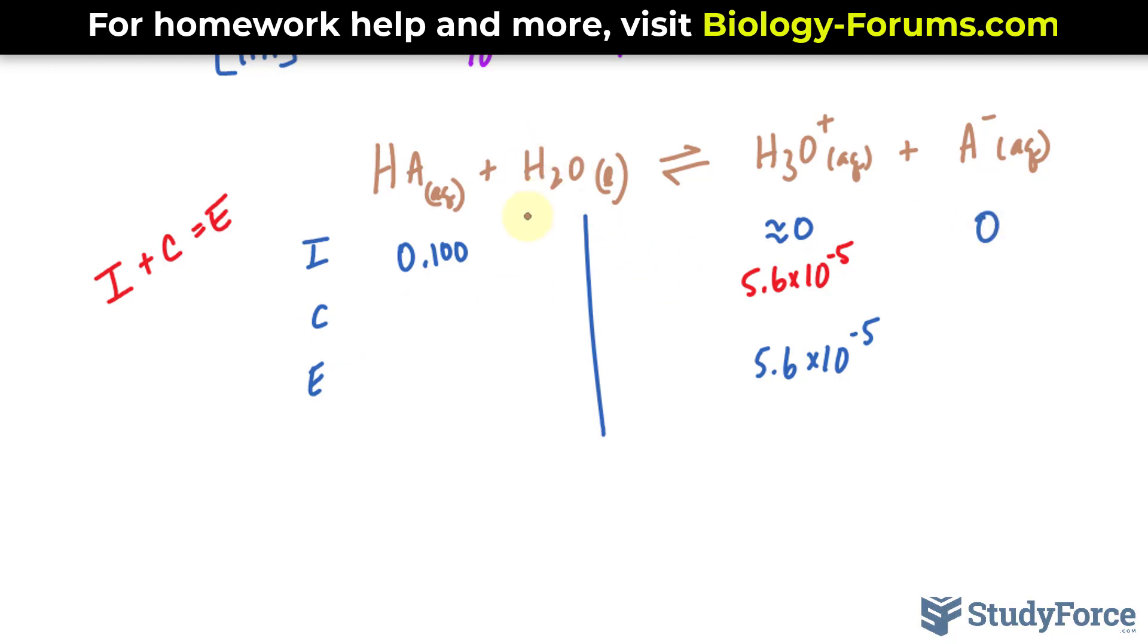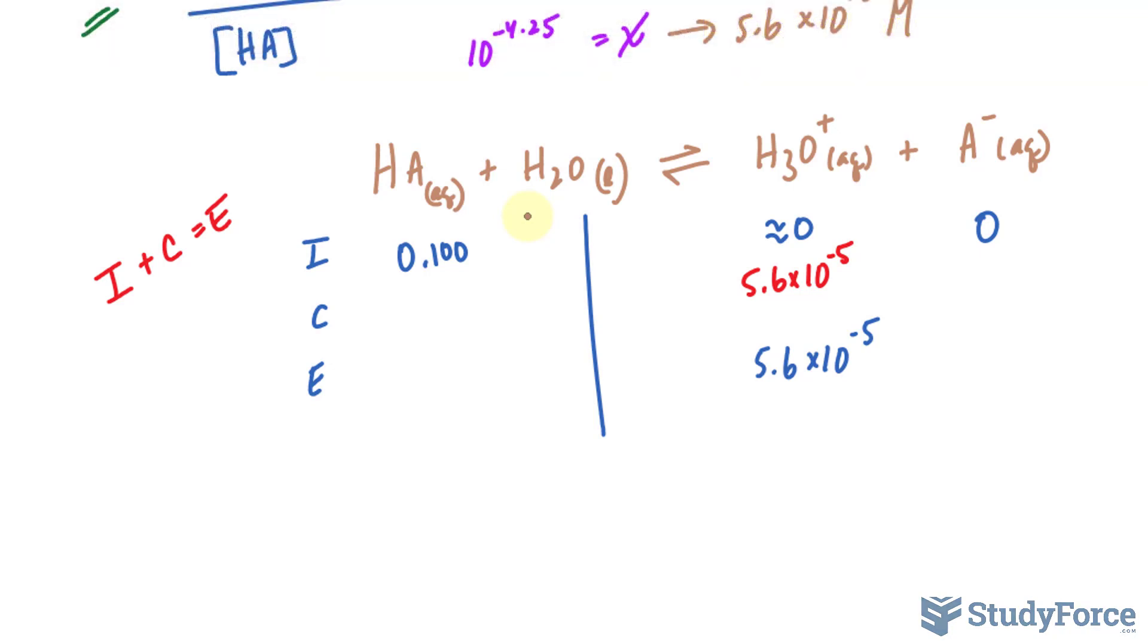To find out the change for the other molecules, minus H2O, I create stoichiometric ratios comparing the different types of molecules. Here's a one-to-one ratio. Therefore, the change here also has to be 5.6 times 10 to the power of negative 5.